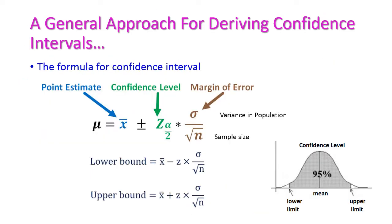Now let us see how to compute the confidence interval. To compute the confidence interval for the mean, we need to concentrate on three important things: first one is the point estimate, that is the numerical mean value; second is the confidence interval, which is the interval between the lower limit to upper limit; and that is multiplied by the margin of error. The margin of error is computed using the variance of population divided by sample size, that is sigma squared by n.